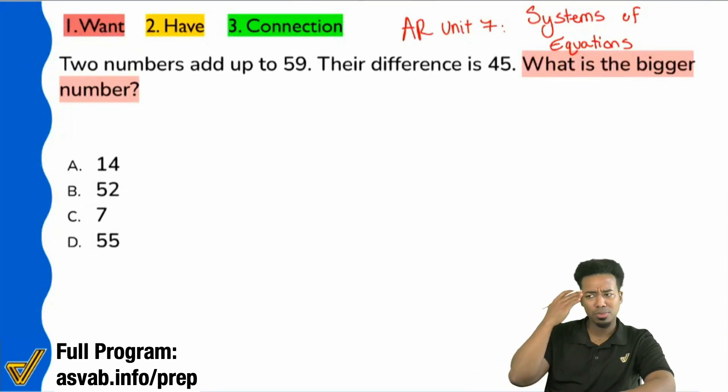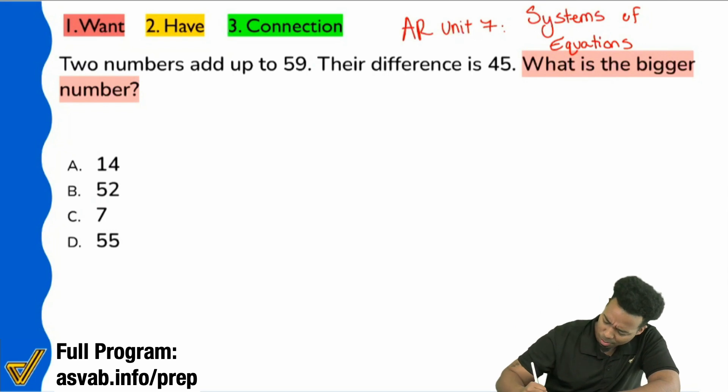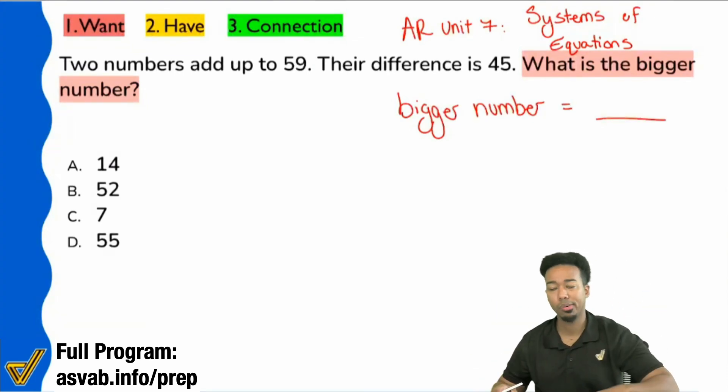So, all right, let's write that down. Either taking a mental note or writing it on paper. That's fine. I'm looking for the bigger number. Bigger number is blank. Now, let's see if we can understand the situation.